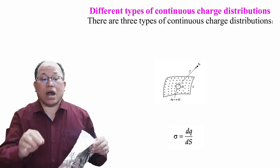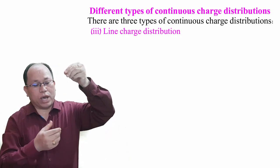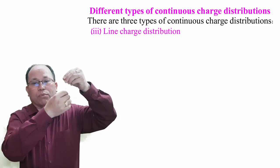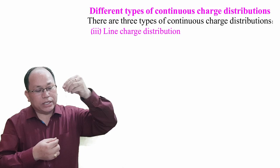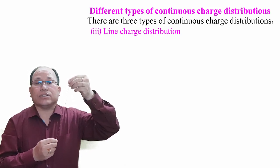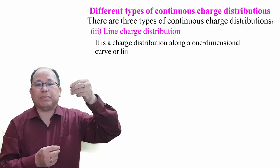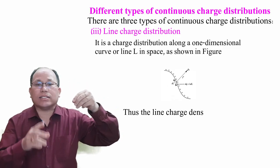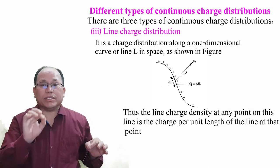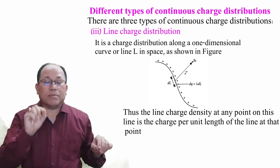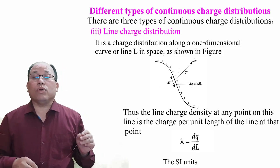The third type is line charge distribution — charge distributed along a one-dimensional curve or line. The linear charge density at any point is the charge per unit length, represented by λ. λ = Q/L, or λ = dQ/dL. The SI unit of λ is Coulomb per meter (C/m).